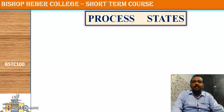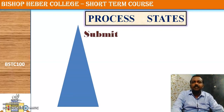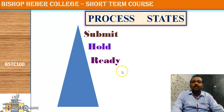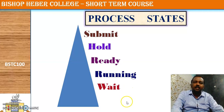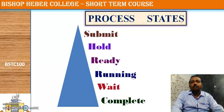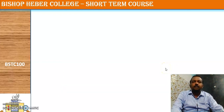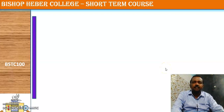A process comes across 6 different states during its execution life cycle. The first one is the submit state, second is hold, third one is ready, fourth is running, fifth is wait, and the last one is complete. These are the 6 different states a process may come across during its execution life cycle, and we will discuss all of them in this video.